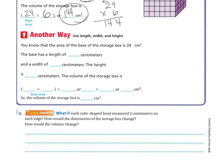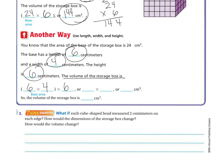Another way: the base of the storage box has a length of 6 centimeters, a width of 4 centimeters, and a height of 6 centimeters. So the volume is length times width times height — 6 times 4 times 6. 6 times 4 is 24, times 6 gives us 144 centimeters cubed.